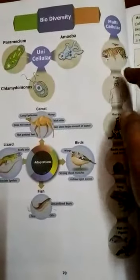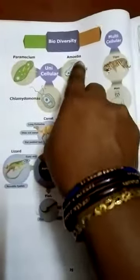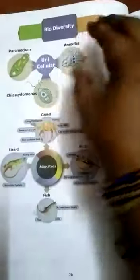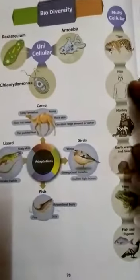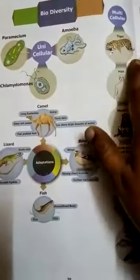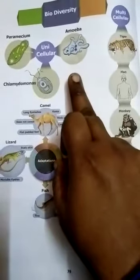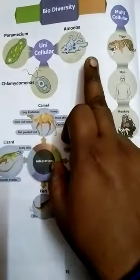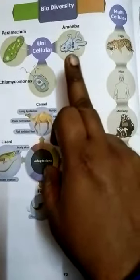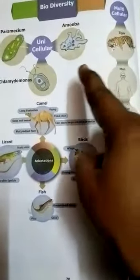In biodiversity, animals are classified based on the function and structure of the organism. It is divided into two categories. The cell made up of a single cell means that organism is called unicellular. Unicellular means one cell alone — it performs all the functions.